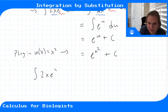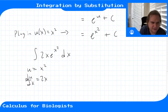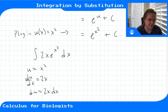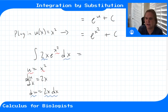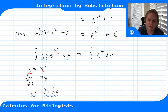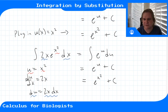Another way to present this: we have the integral of 2x e to the x squared dx, make the substitution u equals x squared, find du/dx equals 2x, then replace the 2x dx with du and x squared with u. That gives the integral of e to the u du, which equals e to the u plus C, then substituting back gives e to the x squared plus C.